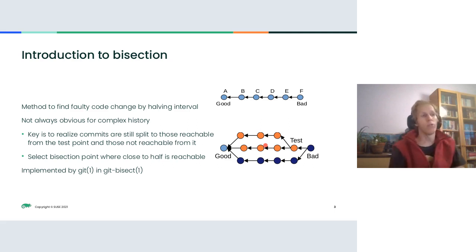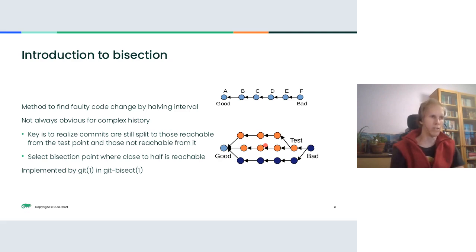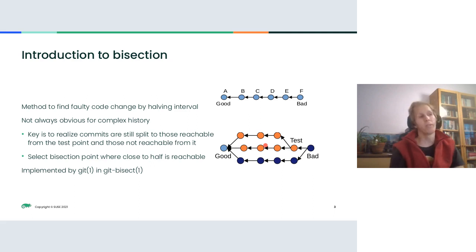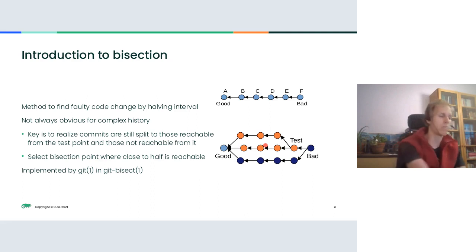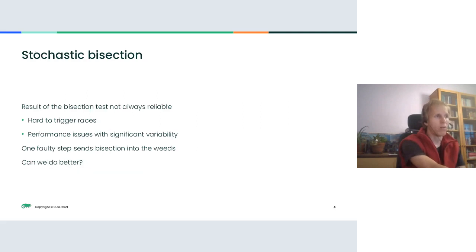This algorithm is essentially implemented by git bisect. As you can see, you don't always halve the exact number of nodes, but you can usually get rid of a sizable portion. So asymptotically you are using a logarithmic number of steps. That's also why git cannot exactly estimate the number of steps it will take — it can only give a rough estimate.